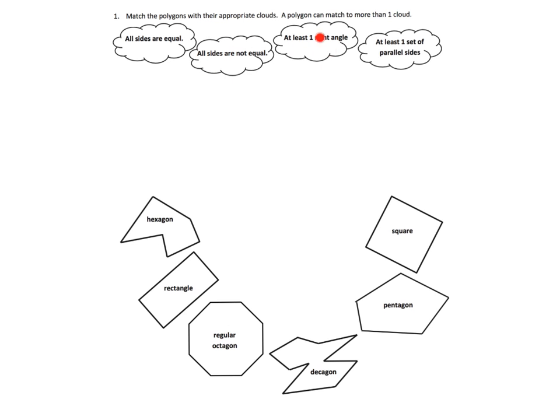For this problem, parents and teachers, we're talking about characteristics like: all sides are equal — that's where we're talking about a regular polygon. I love how Eureka Math begins with these informal descriptions and then introduces the vocabulary. The characteristics are: all sides are equal, all sides are not equal, at least one right angle, and at least one set of parallel sides. It doesn't really matter how students go through and decide to connect these, as long as their connections are correct.